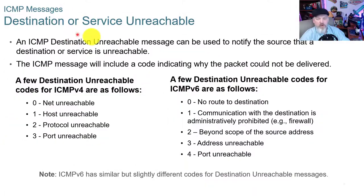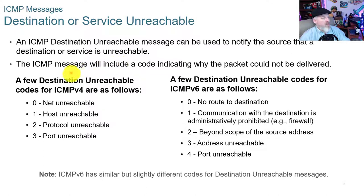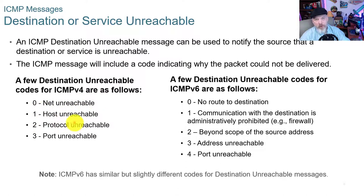For destination or service unreachable, an ICMP destination unreachable message can be used to notify the source that a destination or service is unreachable. The ICMP message includes a code indicating why the packet could not be delivered. For v4: code 0 is net unreachable, 1 is host unreachable, meaning the network is working but the host isn't seen, 2 is protocol unreachable, and 3 is port unreachable.